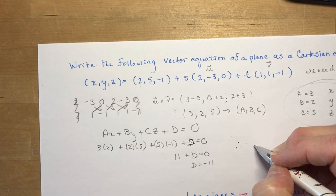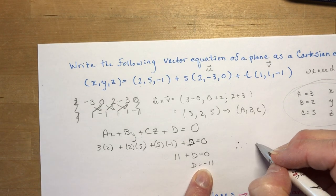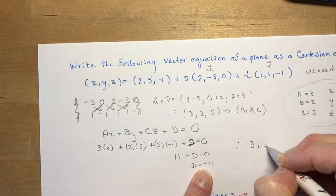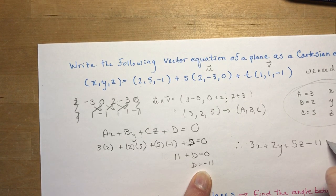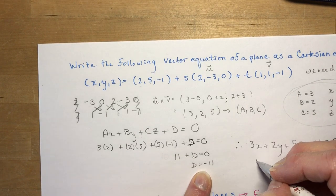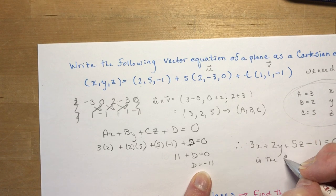Therefore, now we write up plugging in D. So I have 3X plus 2Y plus 5Z minus 11 is equal to 0 is the Cartesian equation.